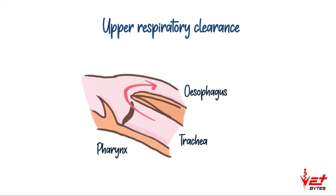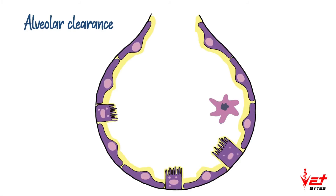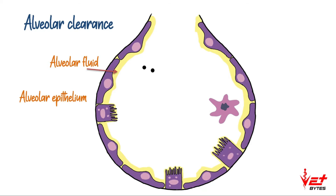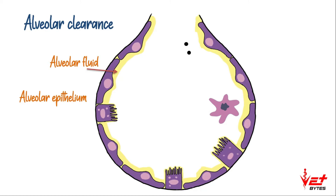Once the mucus blanket reaches the pharynx, the mucus from the trachea is swallowed into the esophagus, and the foreign particles are excreted via feces. Next is alveolar clearance. The alveoli are made up of squamous epithelial cells and the outer layer is covered by a clear fluid called alveolar fluid. Alveolar clearance can occur by many mechanisms.